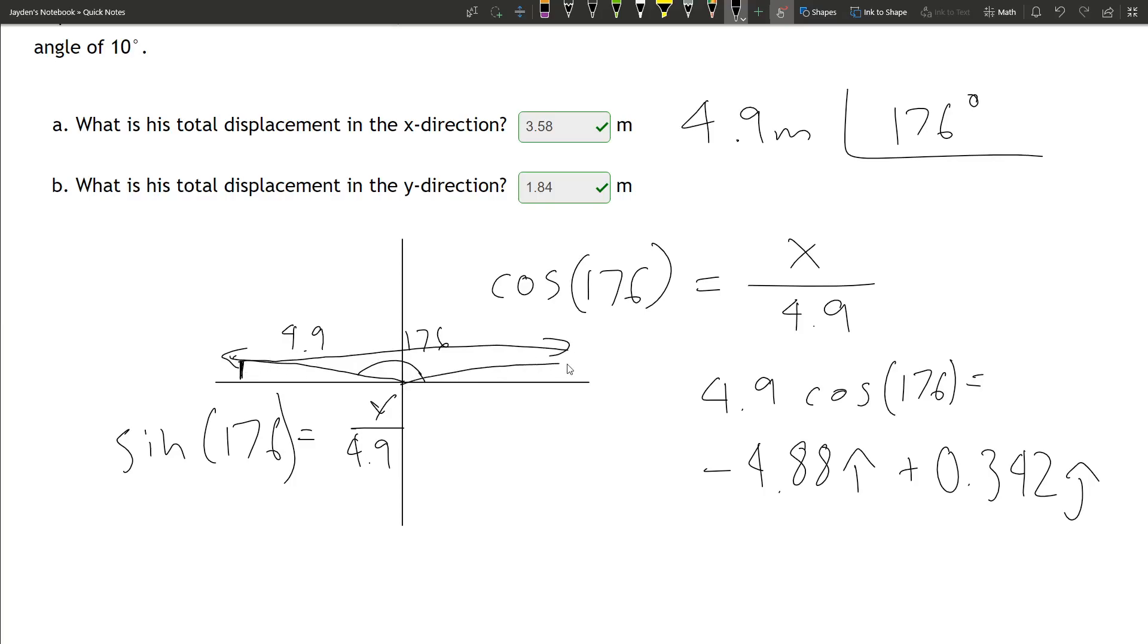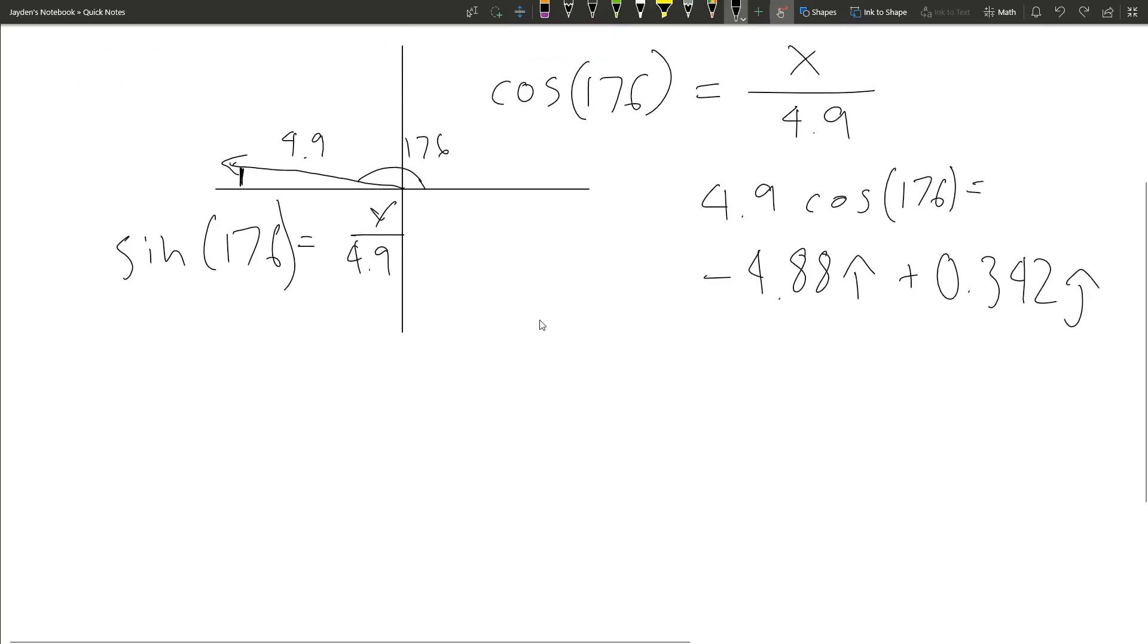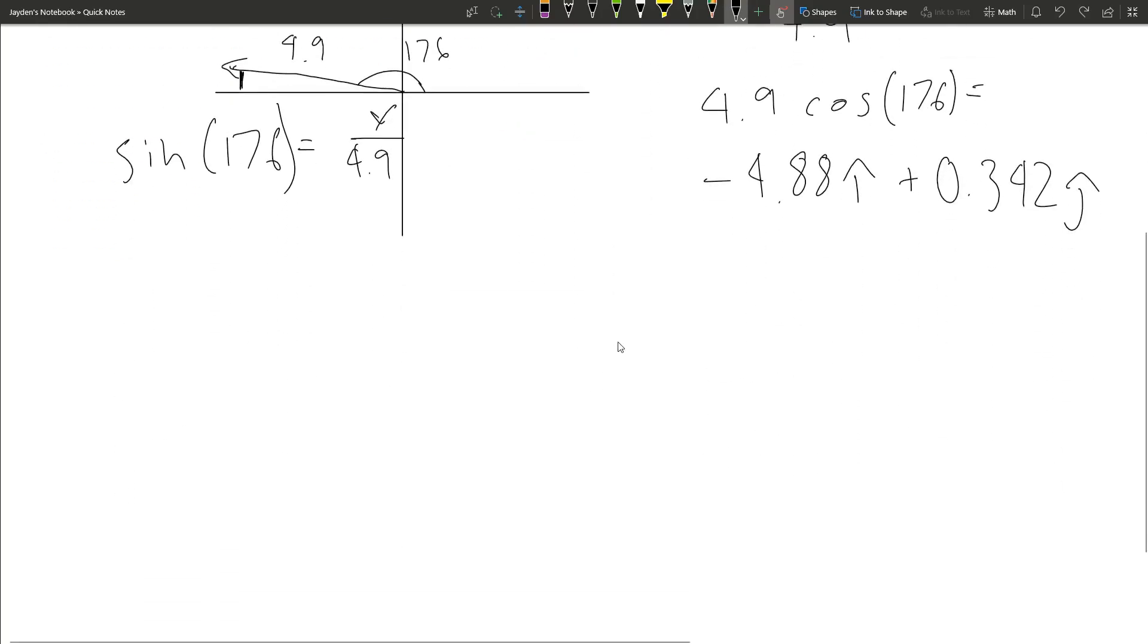We can also look at it from the origin. Let's just do the same thing we did above. Cosine of 10 degrees times the 8.6 will give us the second value to be 8.67i plus, and then we do the sine to find the y value, 1.493j.